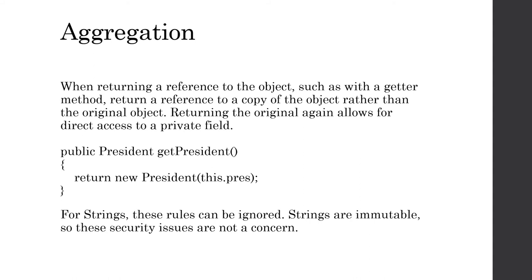The general rule is: whenever returning a reference to an object — such as with a getter — return a reference to a copy of the object rather than the original. Returning the original allows direct access to a private field. One last note: the String class does not require any of this. Strings are immutable — you can't change their contents — so these security issues are not a concern when dealing with strings.